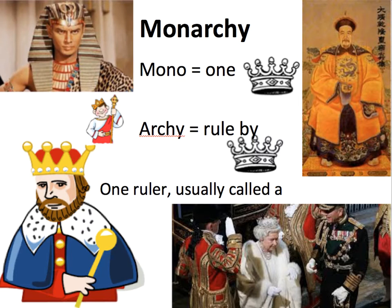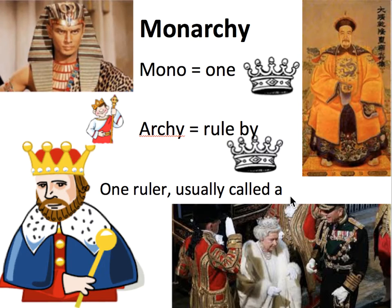The first type of government is probably the most common that most everyone thinks about, and that's called a monarchy. 'Mono' or 'mon' means one. 'Arche' means ruled by. So monarchy means ruled by one.